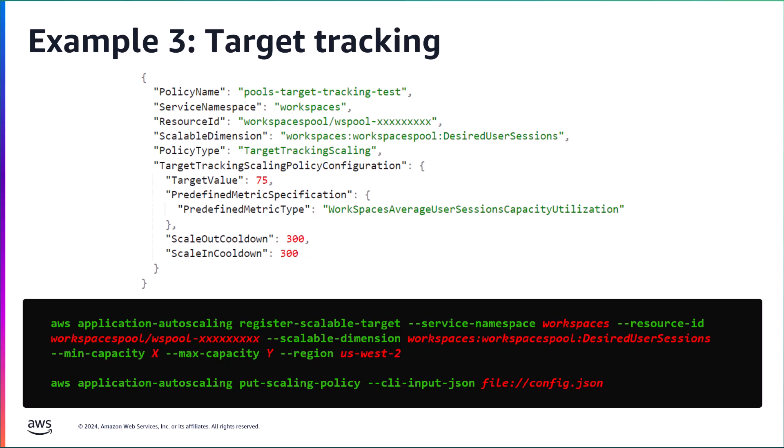Once you've created and saved your policy JSON file, launch the AWS command line session. Run the first command displayed in the black box to register the corresponding pool with the autoscaling service. Again, ensure that the service namespace is workspaces. The resource ID matches the pool ID defined in the policy, that your initial minimum and maximum capacity values are where you want them, and that you are running the command line in the correct AWS region that the pool is deployed in.